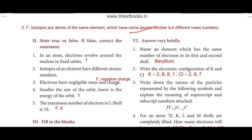Third: Electrons have negligible mass and charge — False. Fourth: The energy of the orbit — True. Fifth: The maximum number of electrons in the L shell is 10 — False, the maximum number is 8.